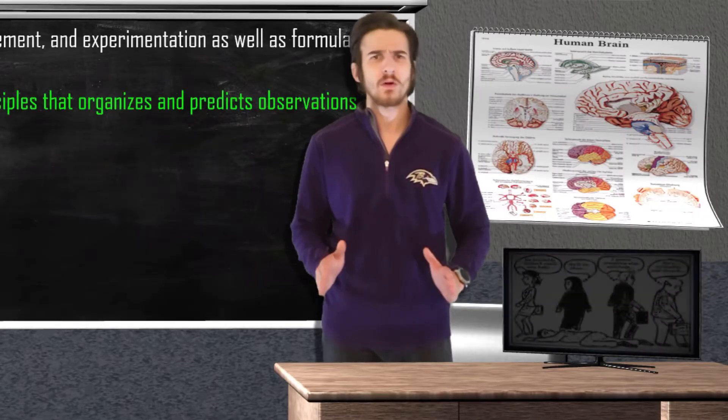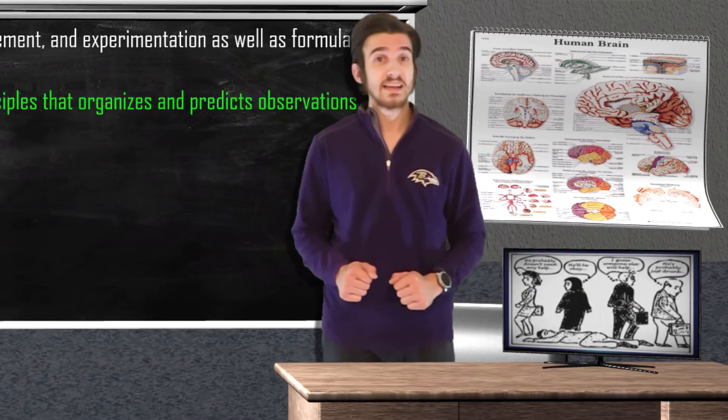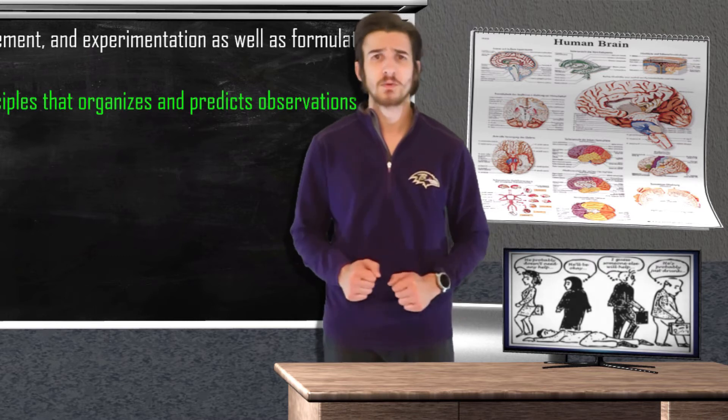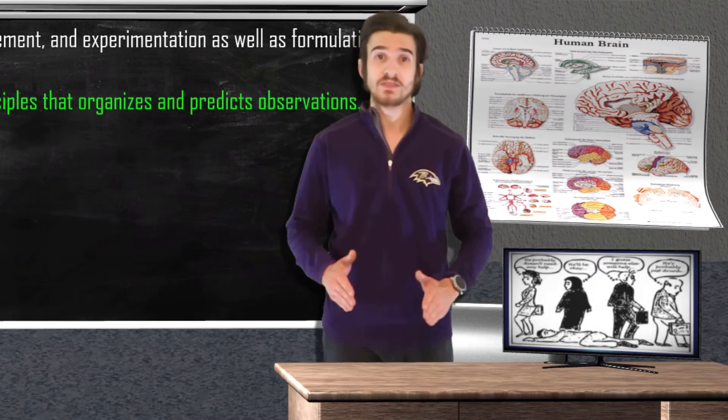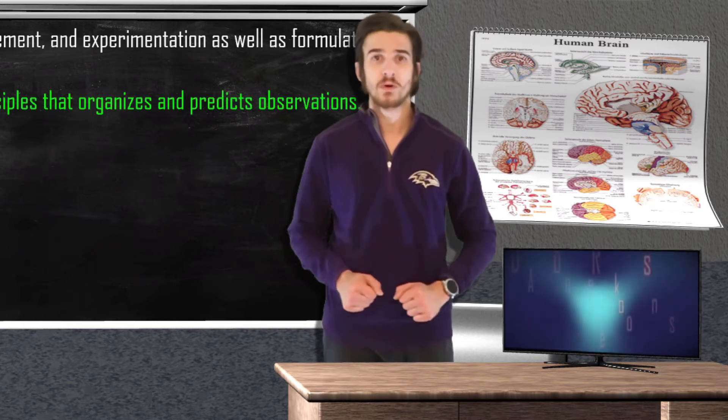Let's say that we observe over and over again that individuals are less likely to offer help to a victim of misfortune when there are more people present. This is a social psychology theory known as the bystander effect, and we're going to use it for our example.